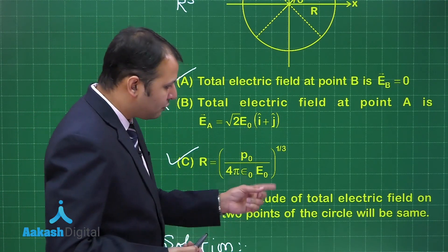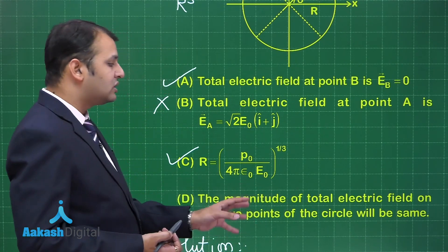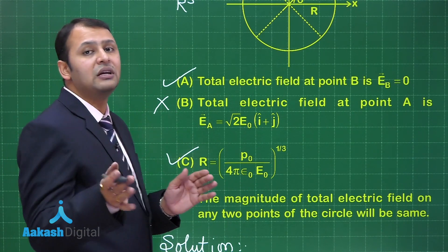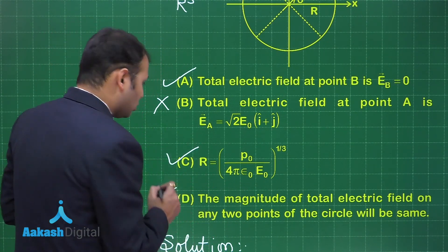Now let's talk about D. The magnitude of total electric field on any 2 points of the circle will be same. No, as you can see here, the electric field at B and A are different. So this is also wrong.